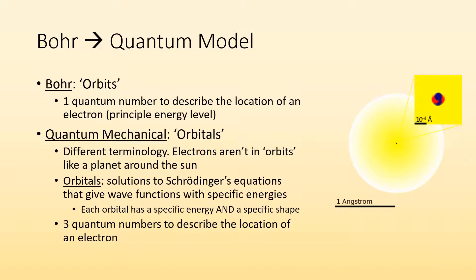But with the quantum mechanical model, we introduce a new term, orbitals. So almost the same word, but not. Electrons aren't in orbits like a planet around the sun anymore. We have these things called orbitals, which are the solutions to Schrödinger's equations that give wave functions with specific energies. So each orbital has a specific energy and a specific shape. These are describing where you're likely to find these electrons. So we have three quantum numbers to describe the location of an electron. There's going to be a fourth one in a future video, but we're going to start with just these three quantum numbers.